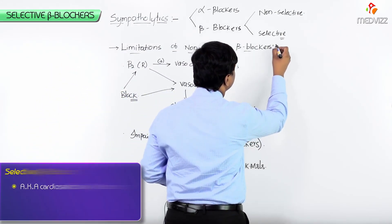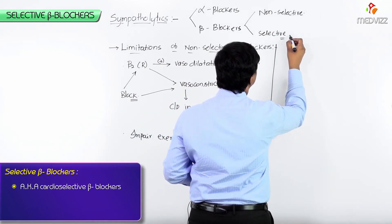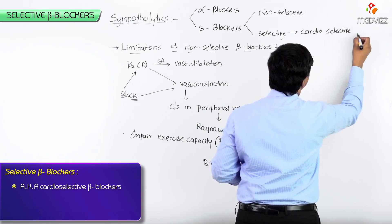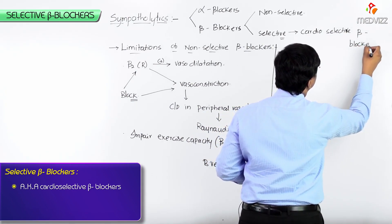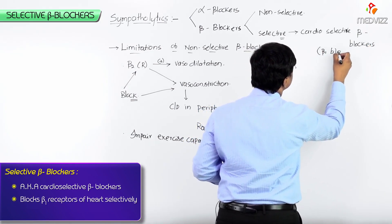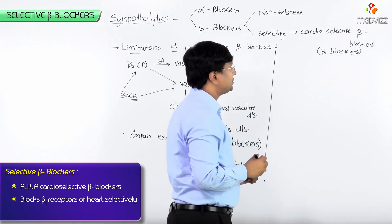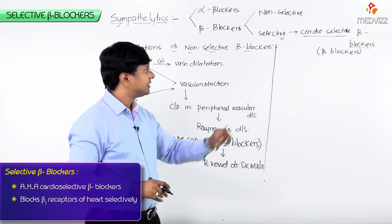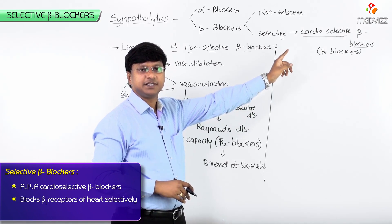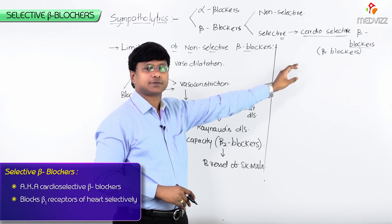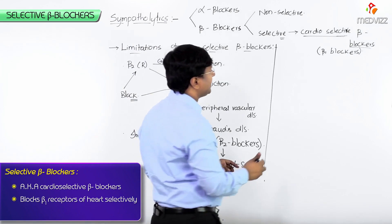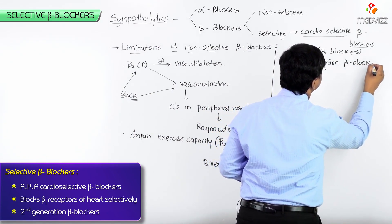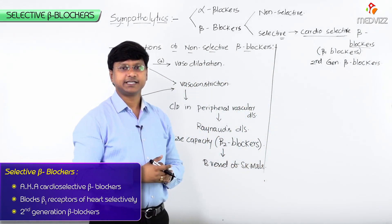Among the selective beta blockers, we have the cardioselective beta blockers. These are beta-1 blockers — within the heart, you have beta-1 receptors. When these beta-1 receptors present within the heart are selectively blocked, the drugs are called cardioselective beta blockers. They are the second generation beta blockers.